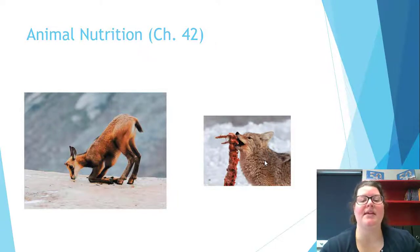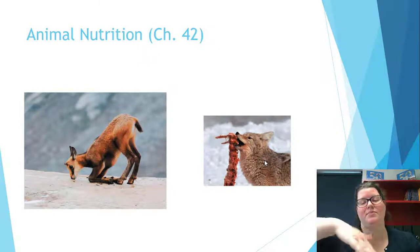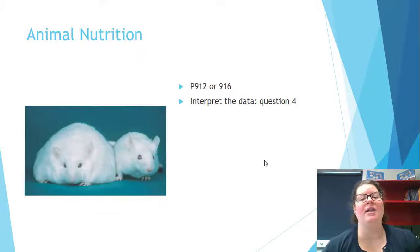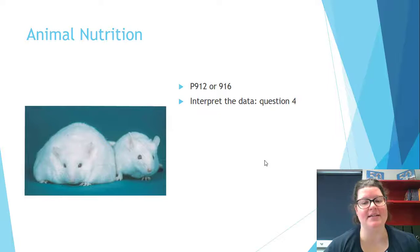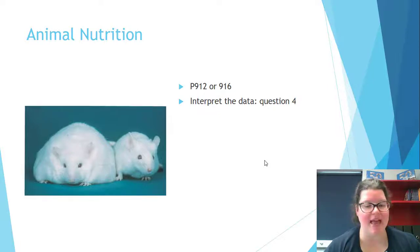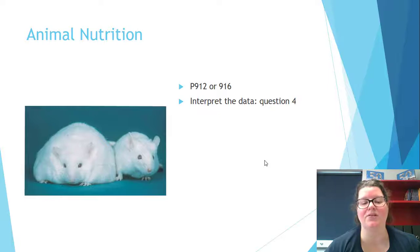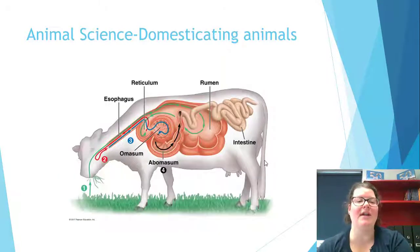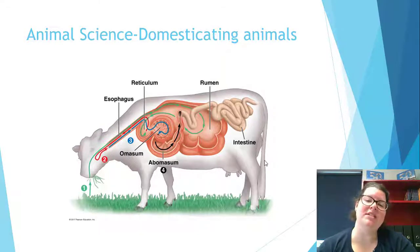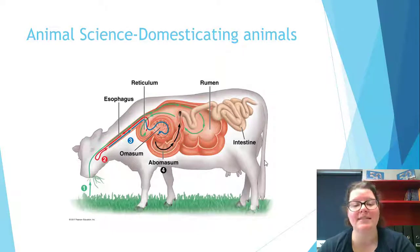An experiment showed that altering one gene caused one mouse to become very fat while an identically fed mouse stayed lean — a genetic link to obesity. Some mild changes in domestic animals include cattle and goats having a rumen, where they eat their food twice through rumination, allowing better digestion and more efficient fat storage.